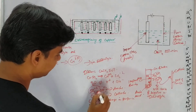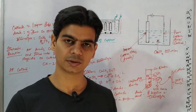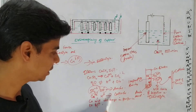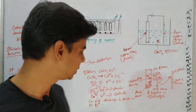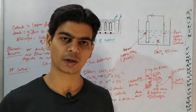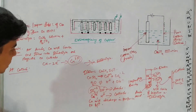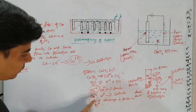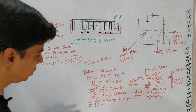At the anode, sulfate and hydroxyl ions migrate there, but due to the nature of the electrode, instead of these two losing electrons, it is copper that will lose electrons — because copper has a higher tendency to lose electrons compared to sulfate and hydroxyl. So copper will lose electrons and enter the electrolyte as copper ions, and from there move to the cathode. At the cathode, copper discharges in preference to hydrogen because the discharge potential of copper is higher.